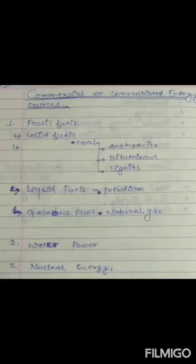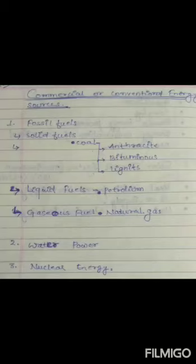There are different types of conventional energy sources. The first is fossil fuel. That can be solid fuels — under solid fuels we consider coal, which has three types: anthracite, bituminous, and lignite, mainly used as fuel. Under liquid fuels, the fossil fuel is petroleum. Under gaseous fuel is natural gas.